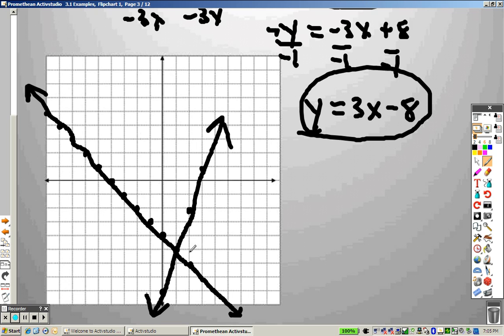And wherever the graph intersects is your answer. It intersects right there at 1, 1, 2, sorry, 1, 2, 3, 4, 5, 1, negative 5, which means your answer for that problem is 1, negative 5.